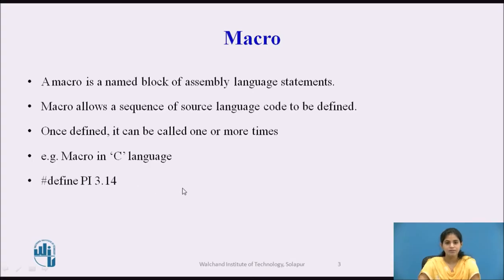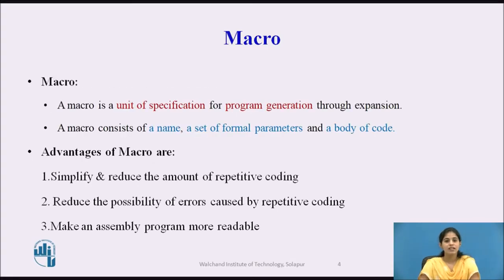A macro is a unit of specification for program generation through expansion. Basically, a macro consists of a name, a set of formal parameters, and a body of code. Now we see the advantages of macros.